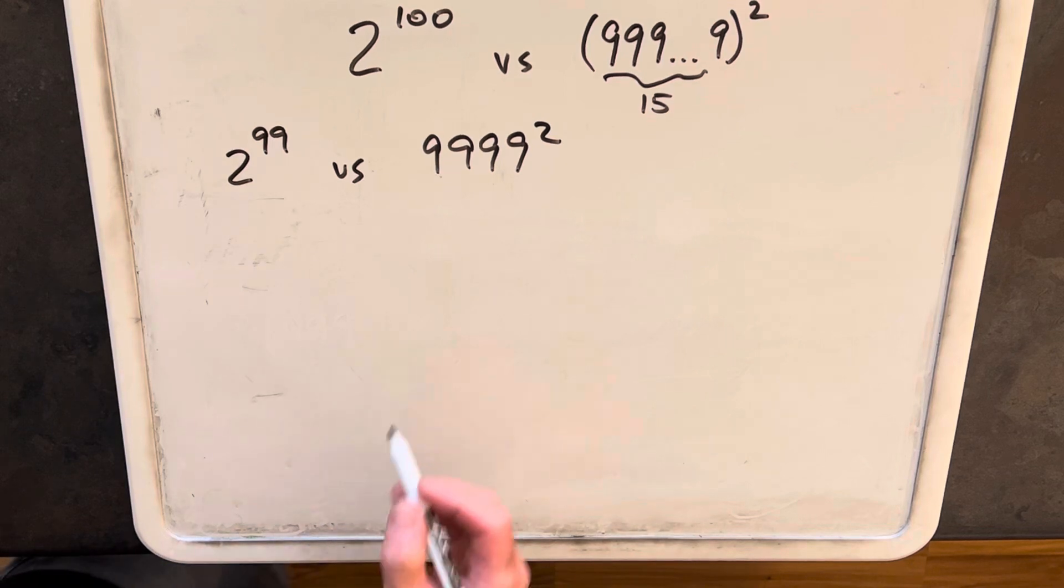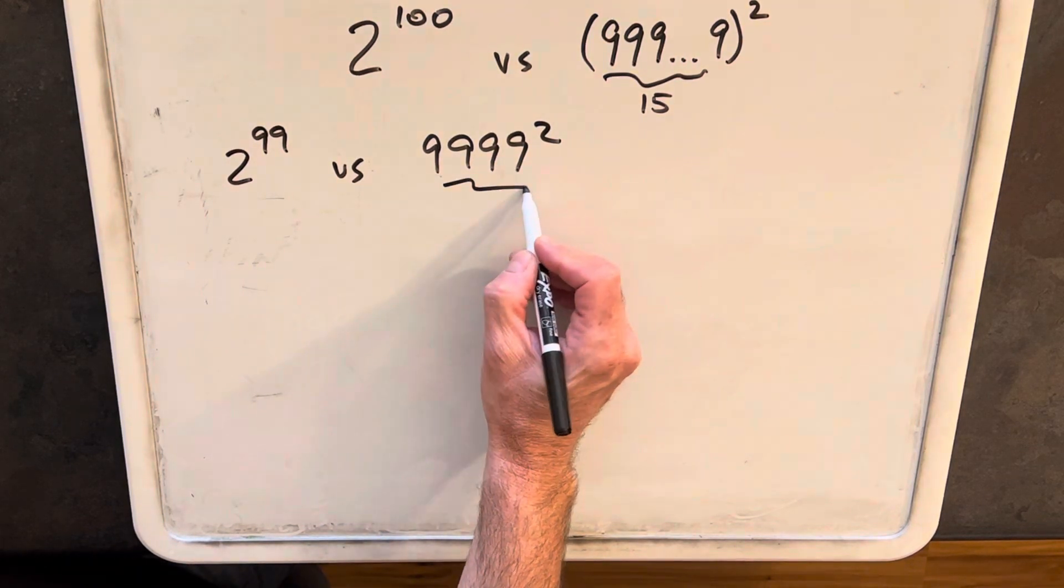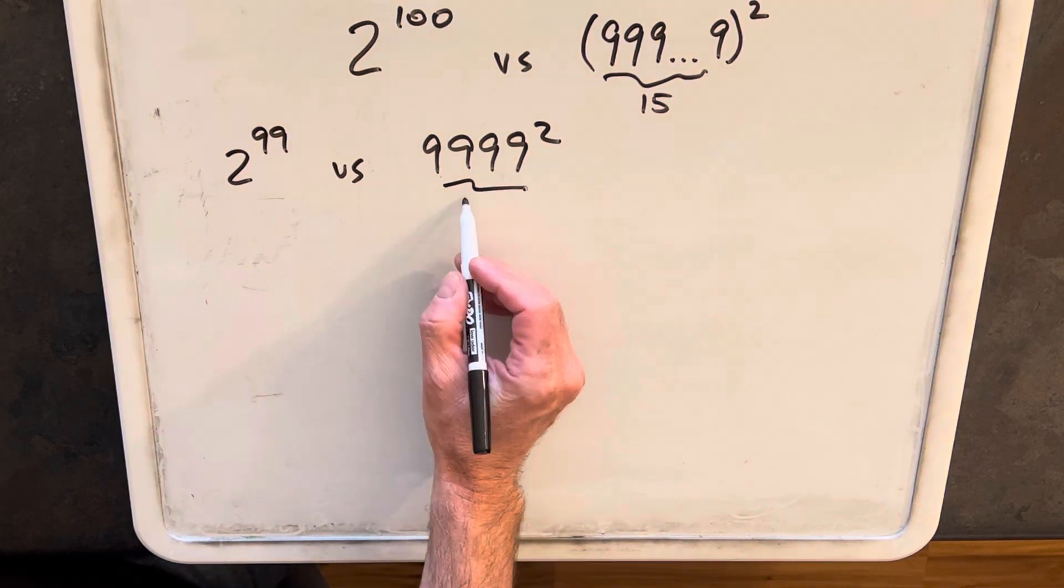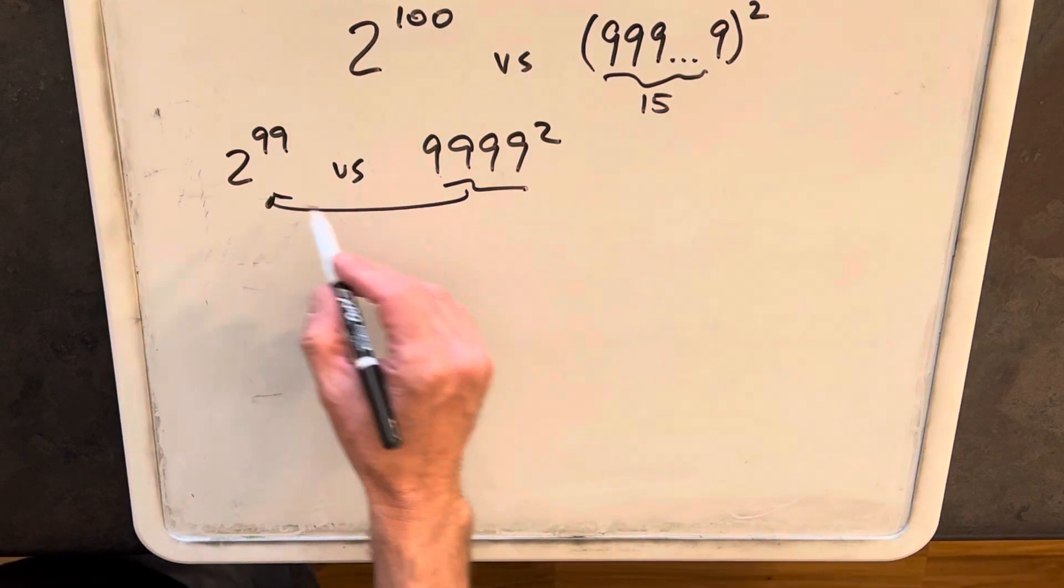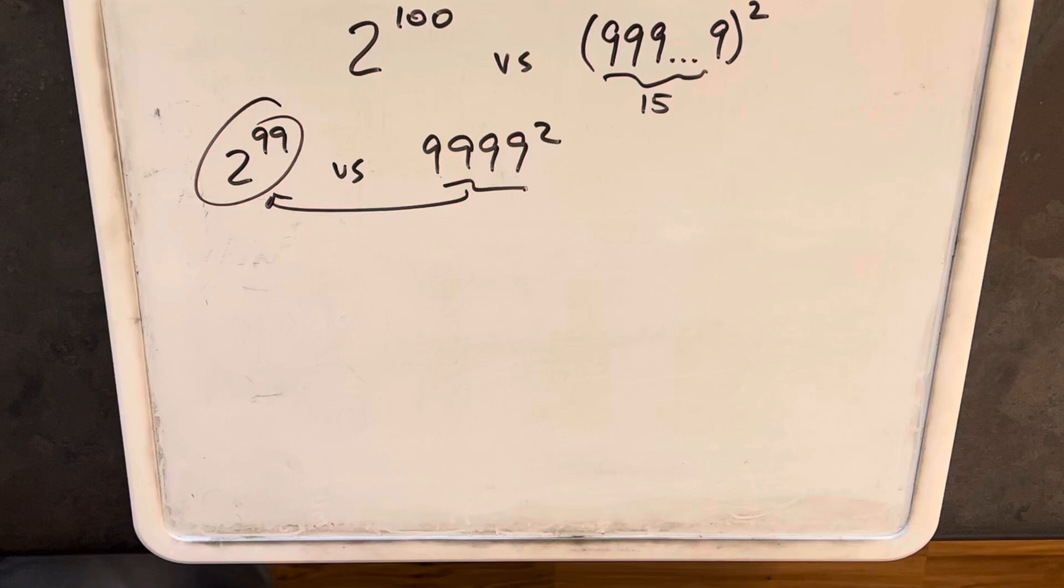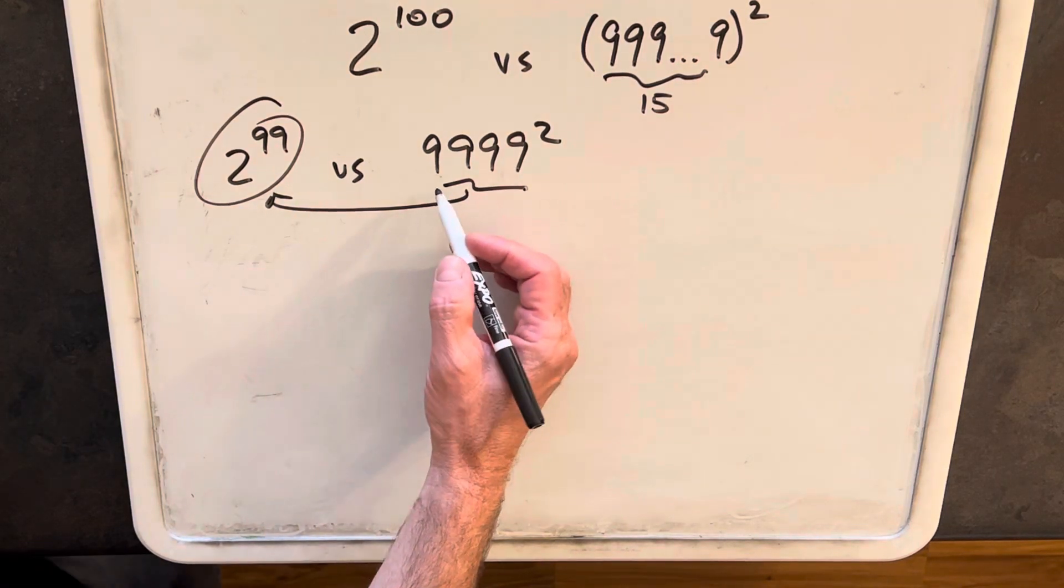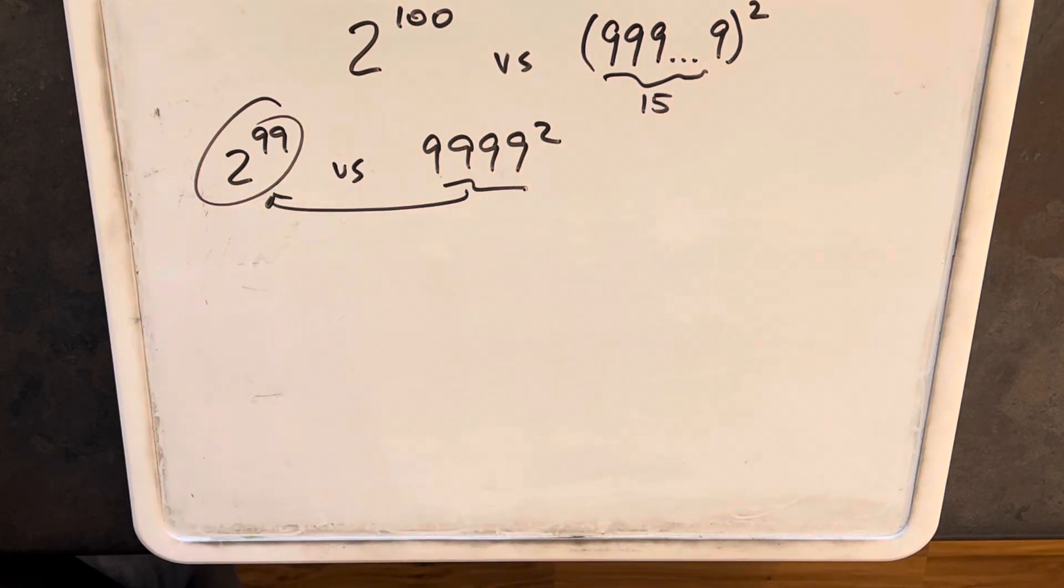And then the question from the last video was how many nines would I need for this to become bigger, or you could look at it either way. What is the maximum for this to still be bigger? But basically we want to know what's the break-even point for the number of nines that we would need.